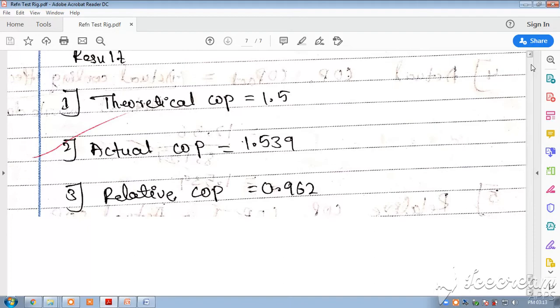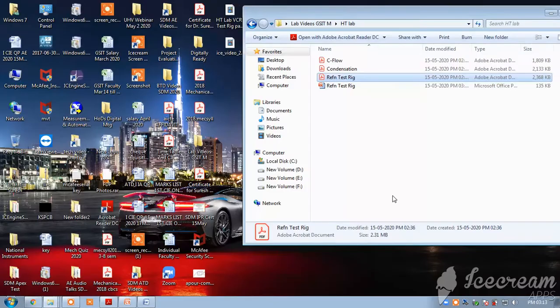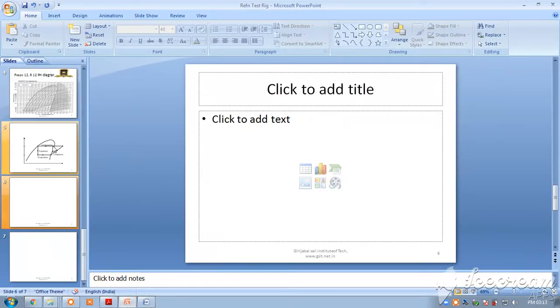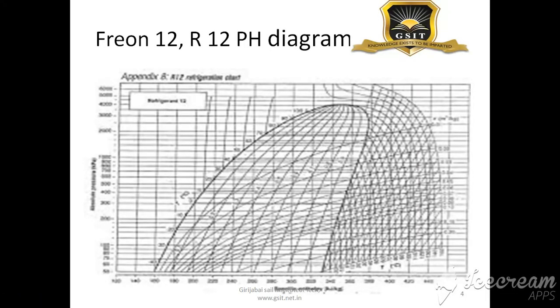Here you can see the pressure-enthalpy diagram. Every refrigerant has its own PH diagram - this is for R12 refrigeration. This line represents the saturated liquid line where X equals 0, and this is the saturated vapor line where X equals 1. In between is the mixed region, the two-phase vapor-liquid region.